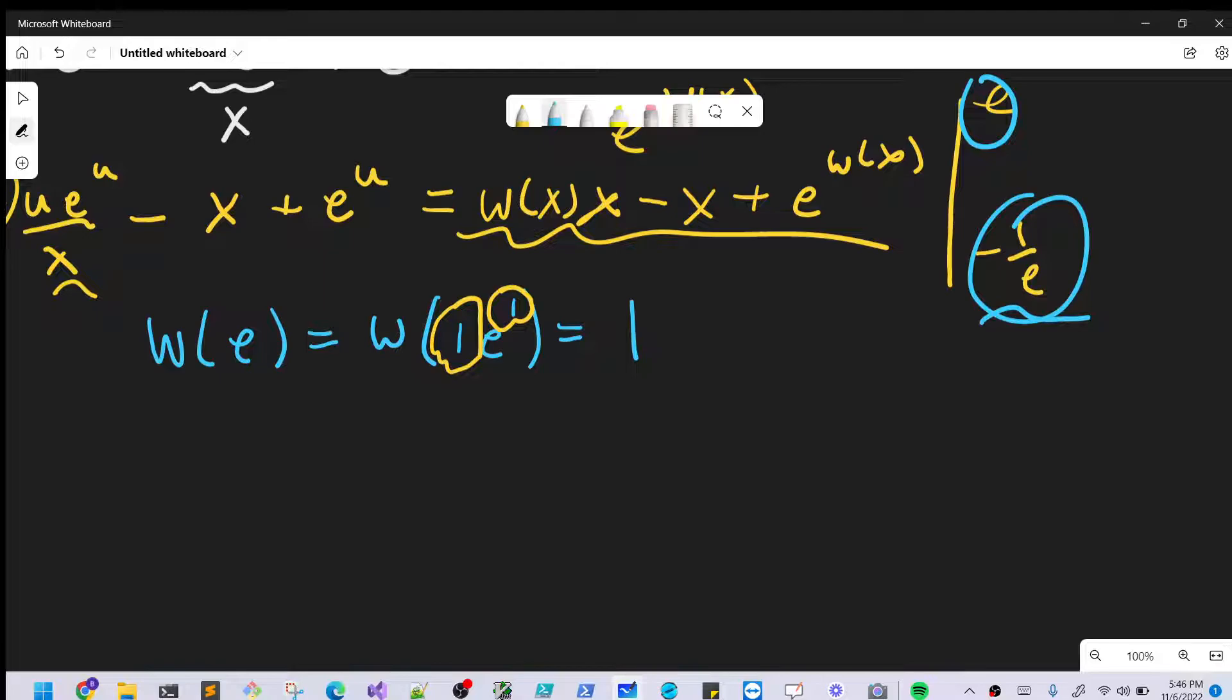And then we can do something similar with this value. Okay, this is a really special value because, well, let's see why it's a special value. Okay, so let's look at this guy. So let's look at the Lambert W of minus 1 over e. So Lambert W minus 1 over e.